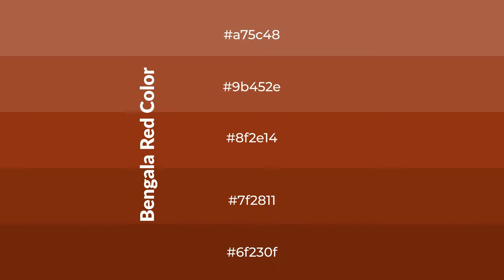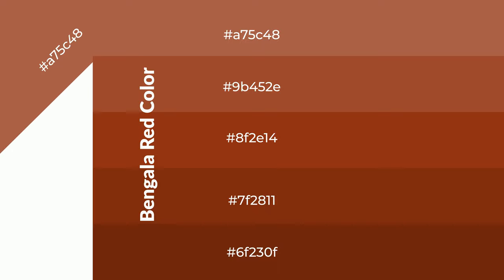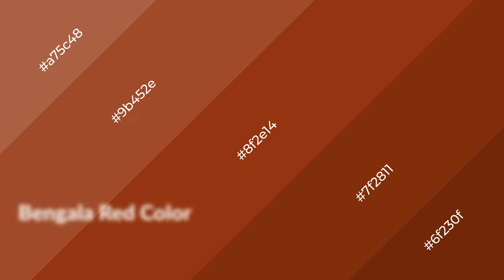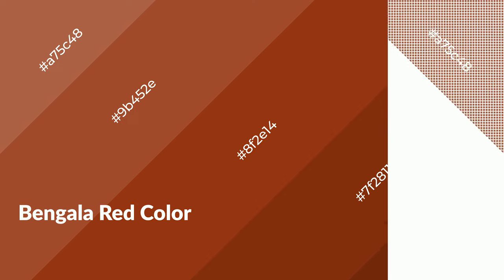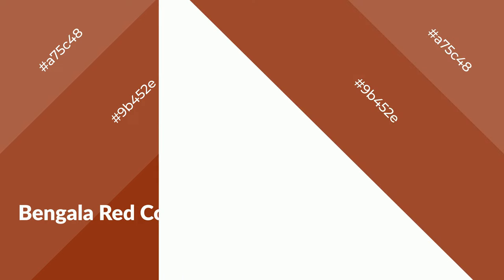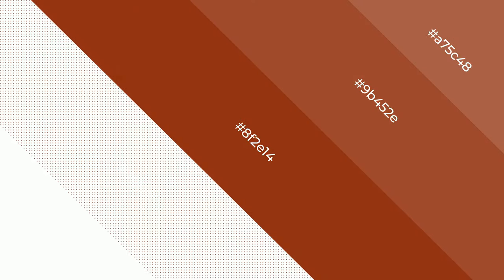To generate shades of a color, we add black to the color. Shades are used in patterns, 3D effects, and layers, and they create depth and drama. Bengala red is a warm color and it emits cozier and active emotions. Warm colors are symbols of warmth, fire, heat, and sunshine.